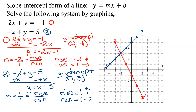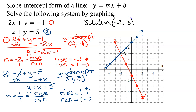Is there a solution to this system? Do these two lines have anything in common? Yes, this point here. The solution to this system is the ordered pair for this intersection point, which is x equals negative 2 and y equals positive 3. And how can you check it? You plug x equals negative 2 and y equals 3 into equation 1 and see if you get a true statement, then do the same for equation 2. You should get two true statements.